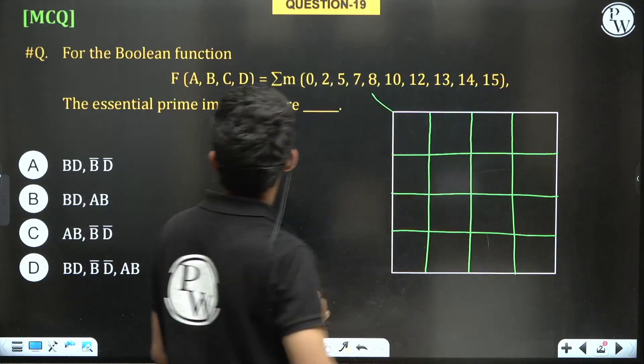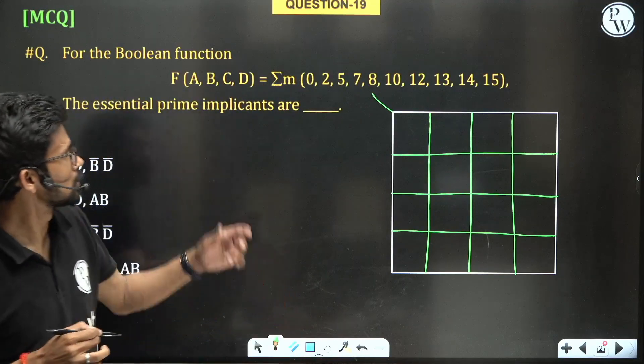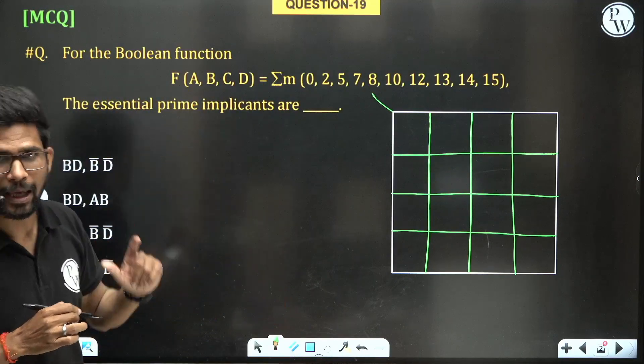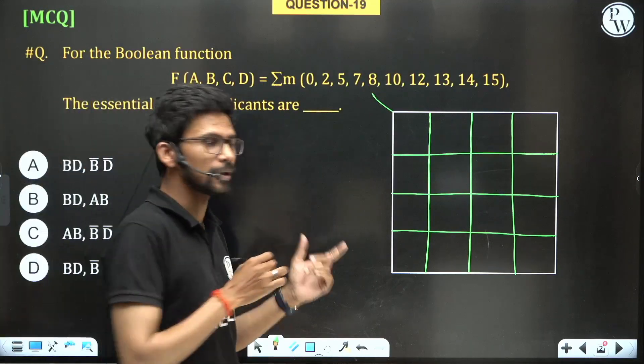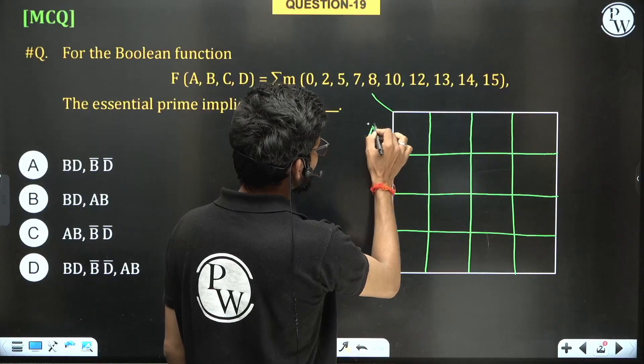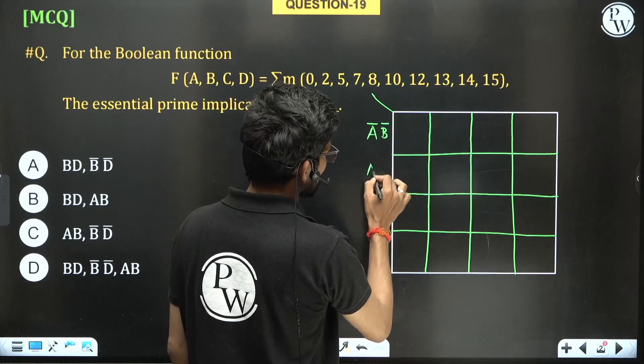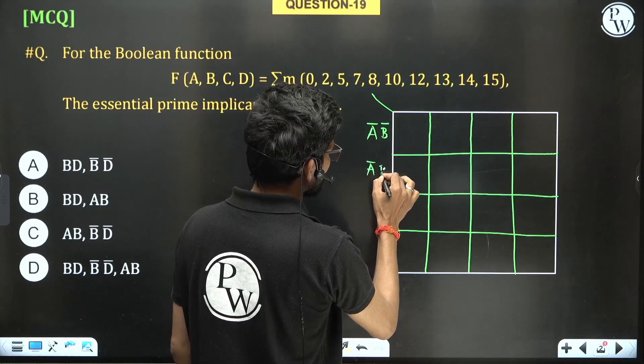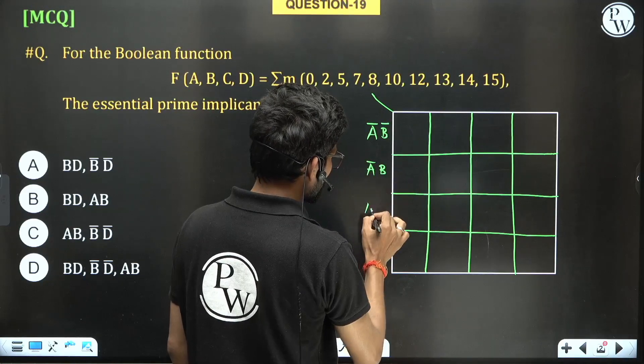Now let us solve the question. For F(A, B, C, D), A and B are on the most significant side, so this K-map will have AB on the row side arranged as A'B, AB, AB'.